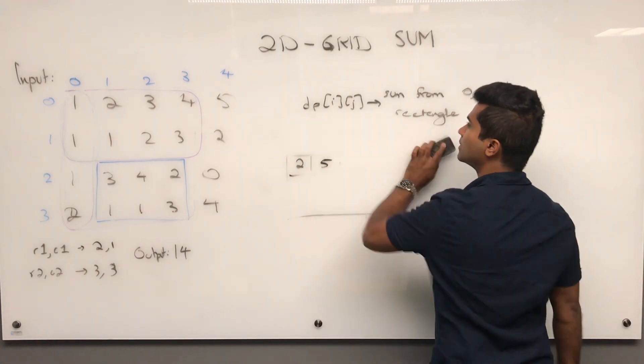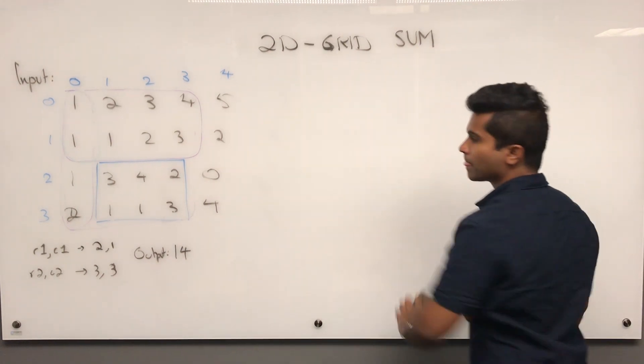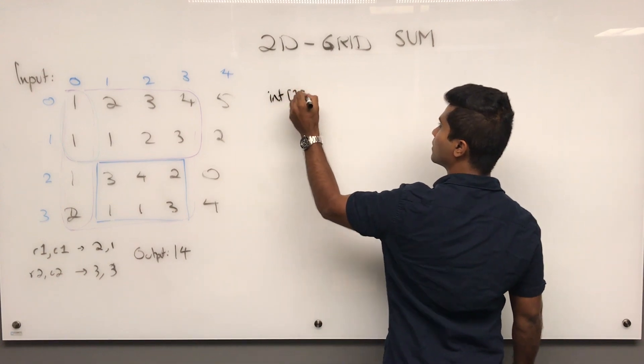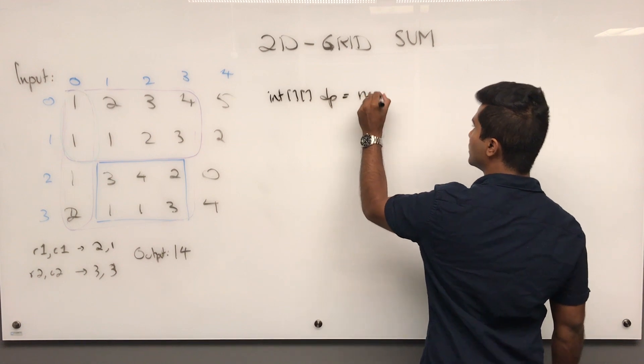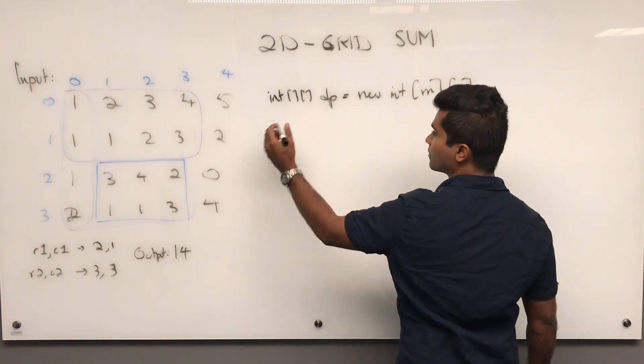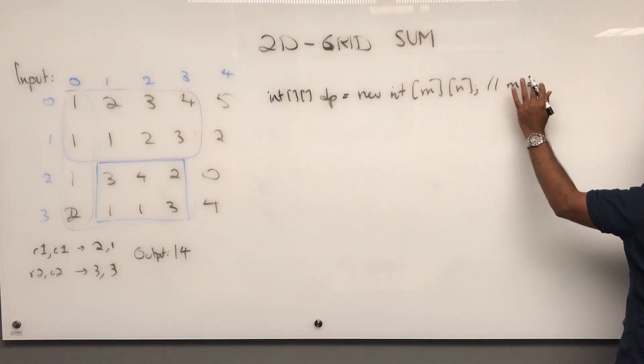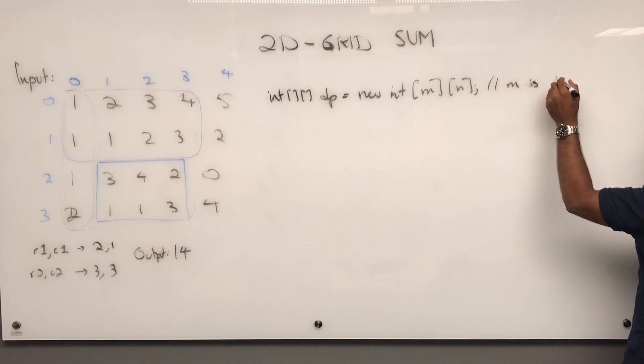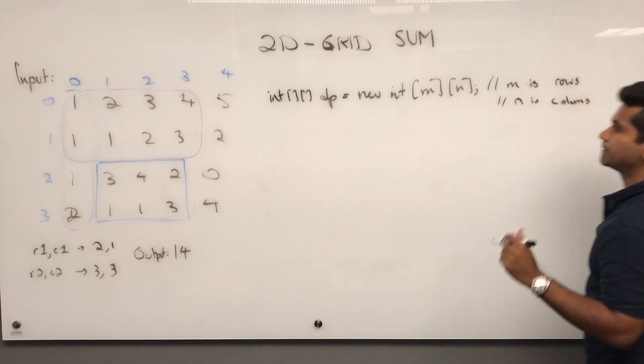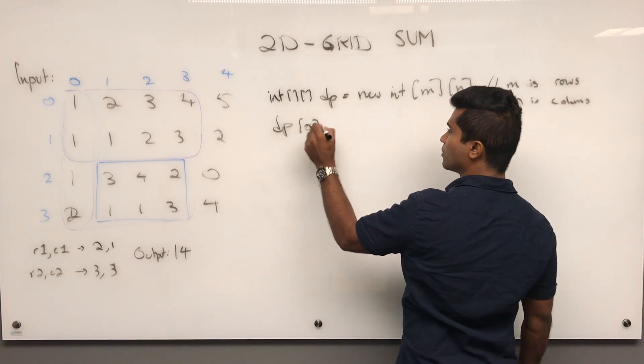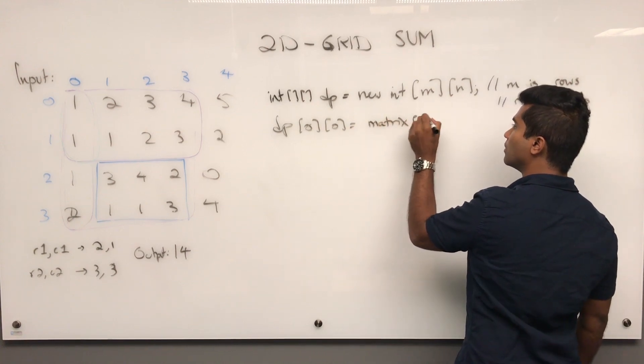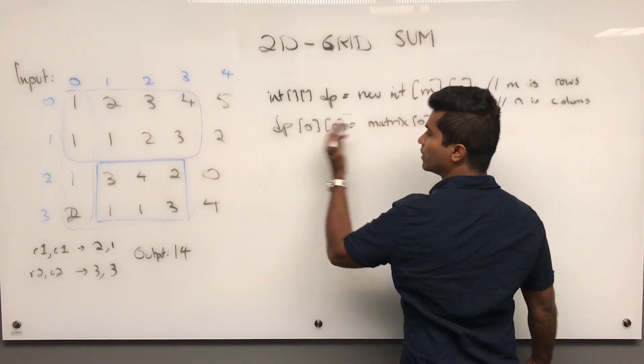Let me write the code for that first. So say int DP is a new int M and N where M and N is the length of that. So we can just say M is rows, N is columns. So first the base case is always just going to be the original. So say matrix of 0, 0.